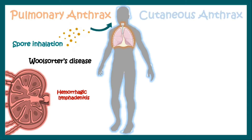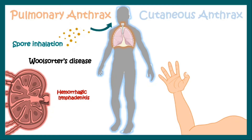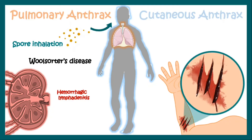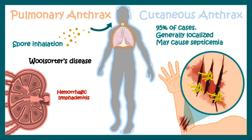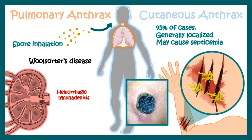Anthrax can also infect the skin. Whenever there is a breach in the skin, through that breach the anthrax spores or bacilli can enter the body and lead to a localized disease. 95% of cases are cutaneous anthrax. They are localized and sometimes can cause septicemia and organ dysfunction. A typical lesion of cutaneous anthrax looks like this.